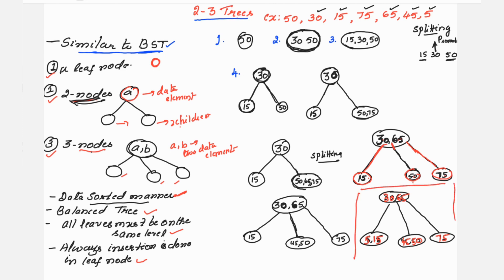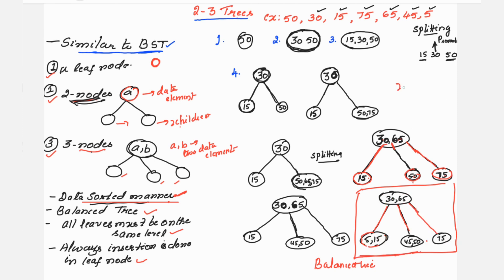We have completed inserting all elements from the list, and this is the resulting two-to-three tree. Let us verify all requirements: data is in sorted order — yes; it is a balanced tree — yes; all leaves are at the same level — yes; insertion was done at the leaf node — yes. This is how you construct a two-to-three tree.